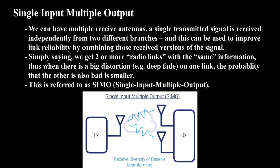Single Input Multiple Output: we can have multiple receive antennas. A single transmitted signal is received independently from two different branches, and this can be used to improve link reliability by combining those received versions of the signal. Simply saying, we get two or more radio links with the same information, thus when there is a big distortion — for example, deep fade — on one link, the probability that the other is also bad is smaller. This is referred to as SIMO, Single Input Multiple Output.